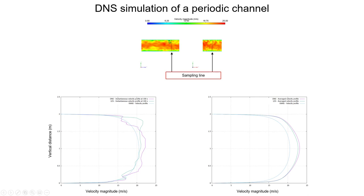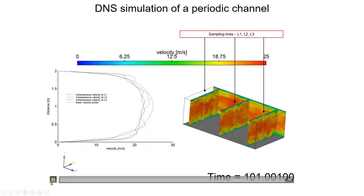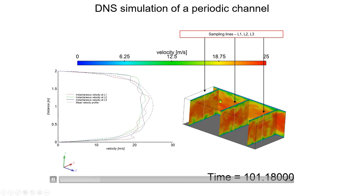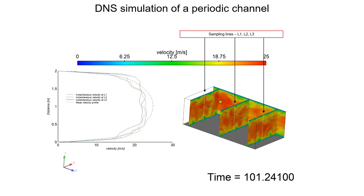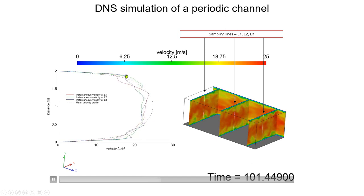To do this kind of simulation, when you run it you need to do a lot of sampling. For instance, you put a line in the channel and start to gather all the information passing through that line or probes and points. This is a coarser mesh — still finer than the one we're going to use — and we're sampling these lines and gathering all the information. We look at the average profile and see the fluctuations in all directions.